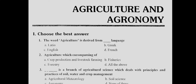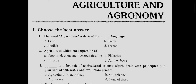Question 1: The word agriculture is derived from Latin. Answer is A. Question 2: Agriculture encompasses which of the following? Answer is D, all of the above — including crop production, livestock, fisheries, and forestry. Question 3: Agronomy is a branch of agricultural science which deals with the principles and practices of soil, water, and crop management. Answer is C, agronomy.